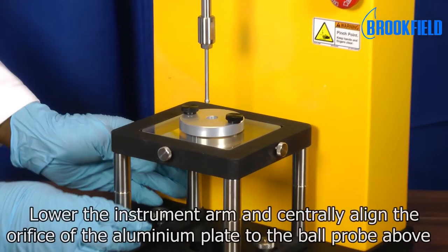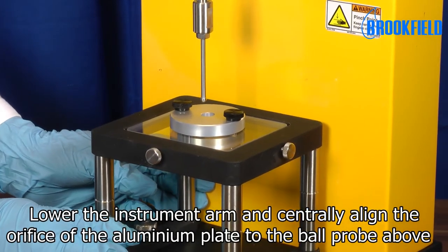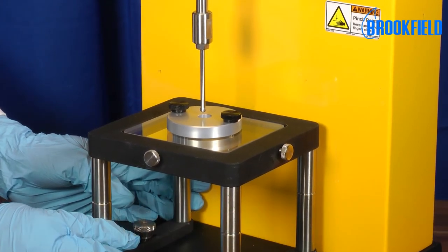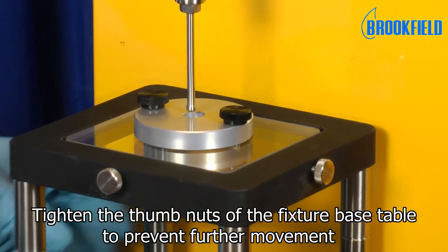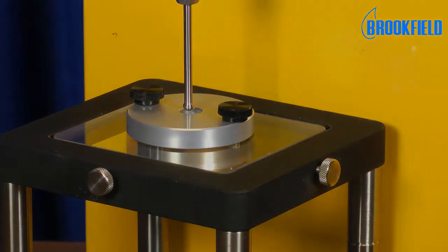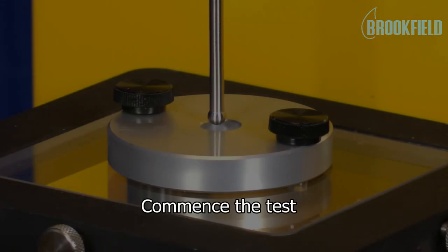Lower the instrument arm and centrally align the orifice of the aluminum plate to the ball probe above. Once alignment is complete, tighten the thumb nuts of the fixture base table to prevent further movement. The test can now begin.